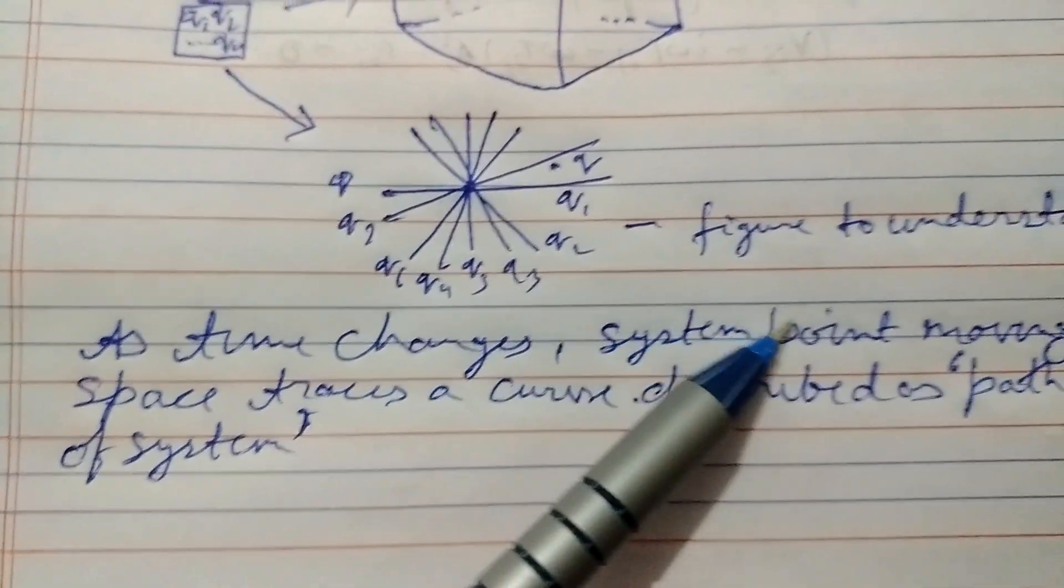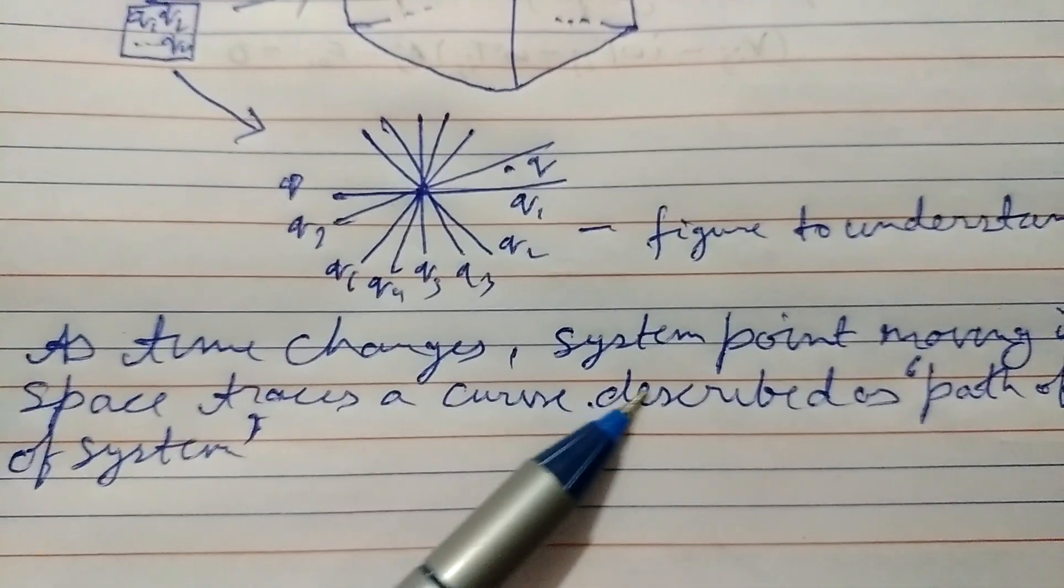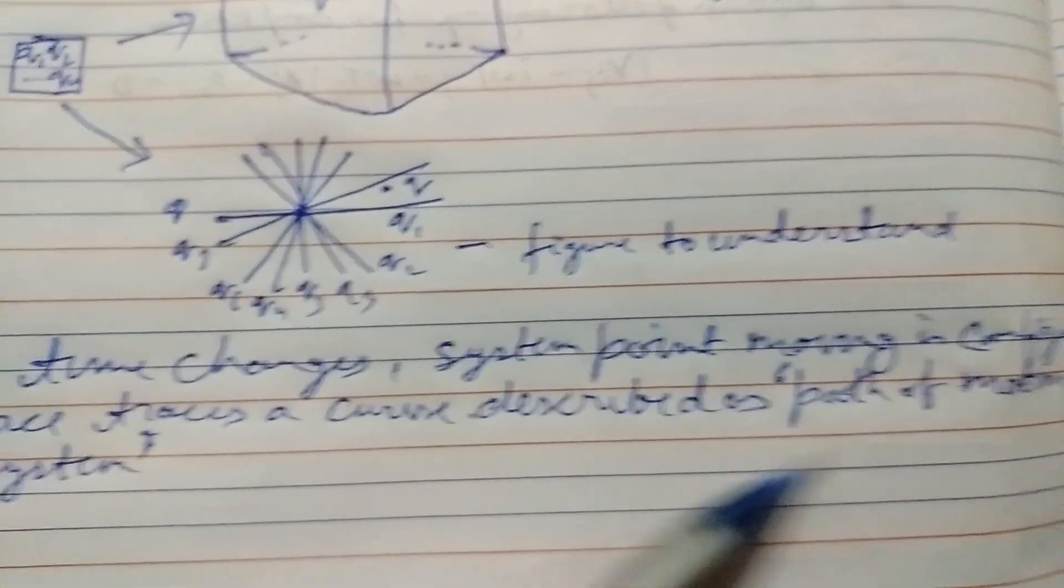As time changes, the system points moving in a configuration space traces a curve described as path of motion of a system.